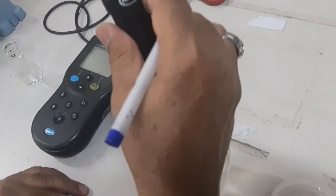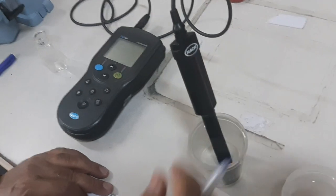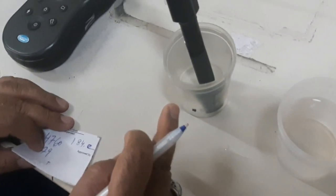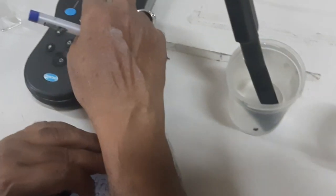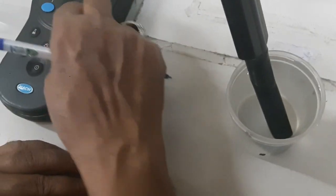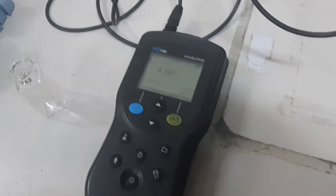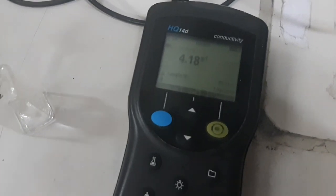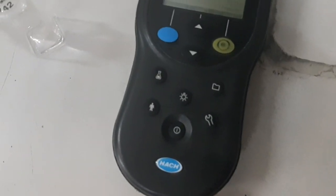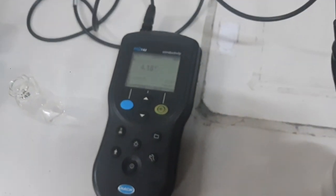And now, he will check also the reject water, the reject water of the RO. Now, the reject water of the RO, he is checking on the device. This is around 4.1 gram per liter.